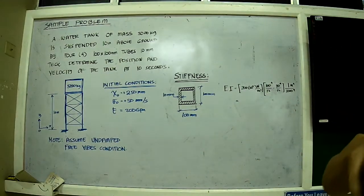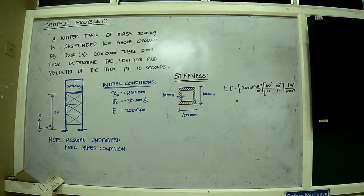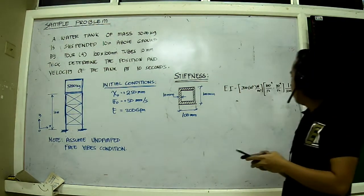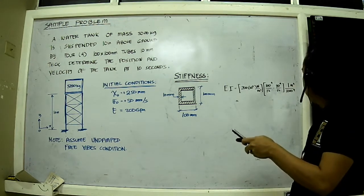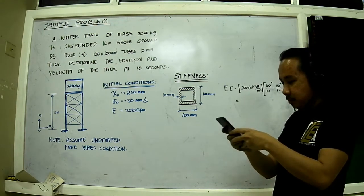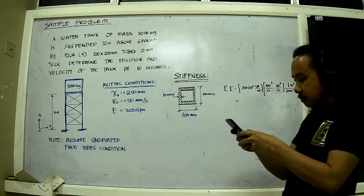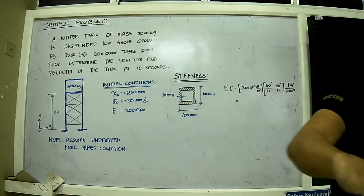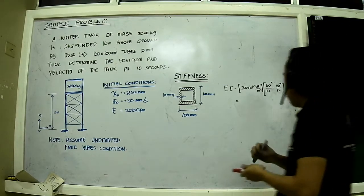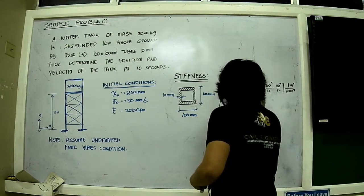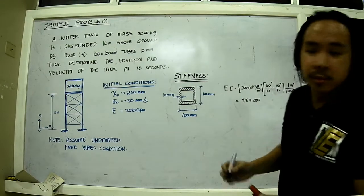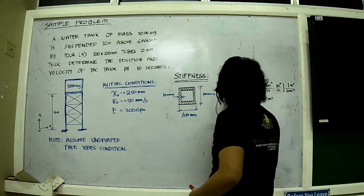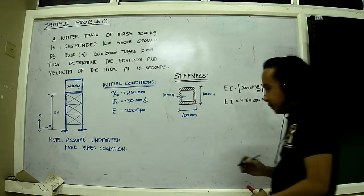Now if I were to solve for EI, let me grab a calculator. Our EI should be equal to 9,840,000... this is 9,812,300. So this is our number for EI.